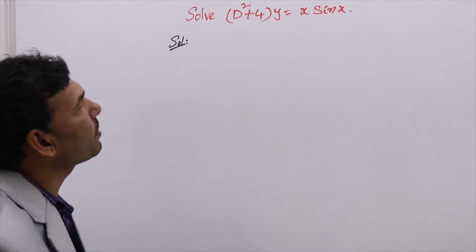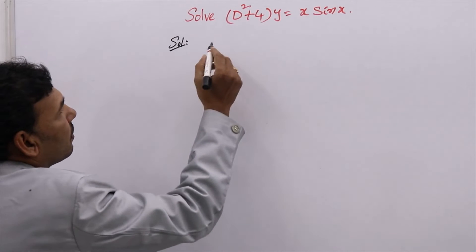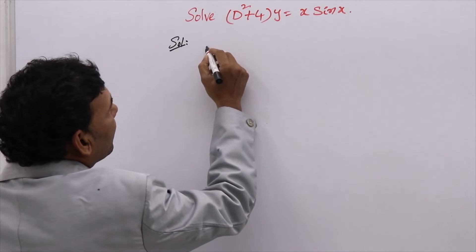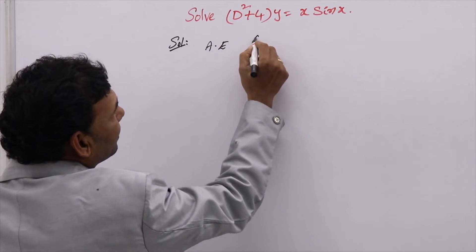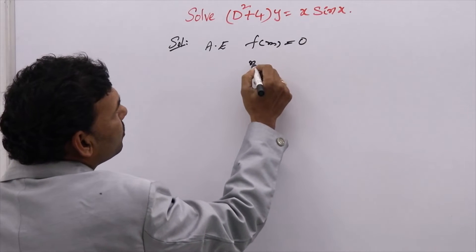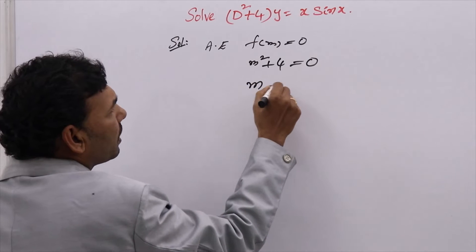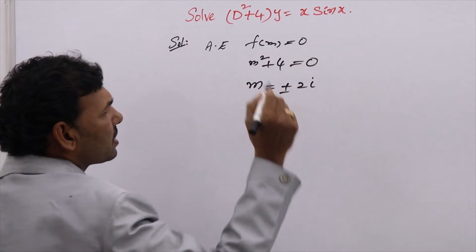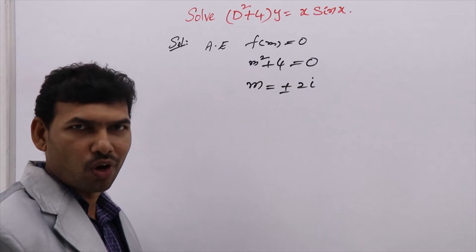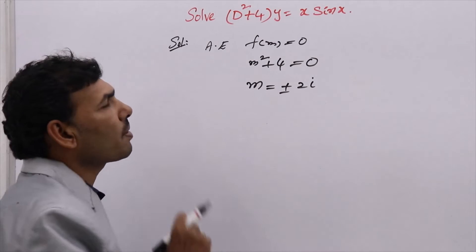Solve: (D²+4)y = x·sin(x). To solve this, first we need to find the complementary function. Write the auxiliary equation: f(m) = 0, which gives m²+4 = 0, so m = ±2i. That is, alpha is 0 and beta is 2.